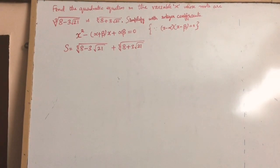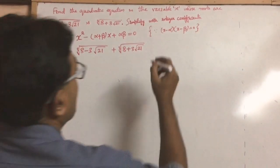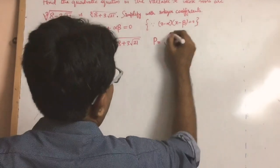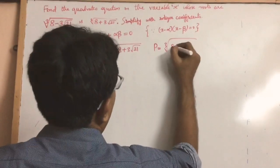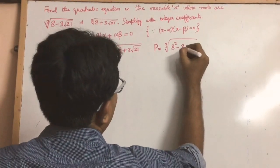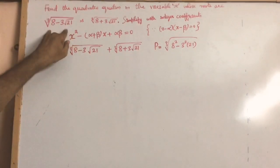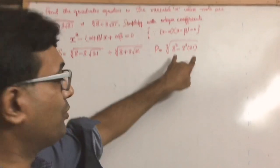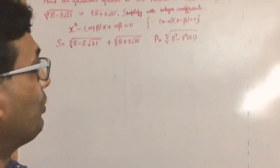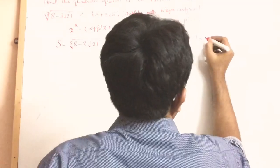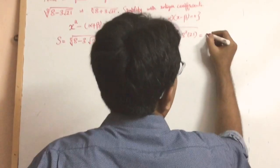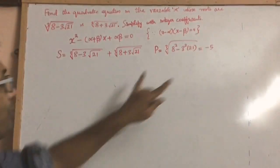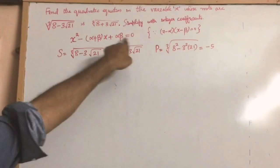The product is quite easy. The product is cube root of 8 squared minus 3 squared times 21, because this is in the form (a minus b)(a plus b), so the product is a squared minus b squared. This simplifies to minus 5. So we know the product of the roots is minus 5.